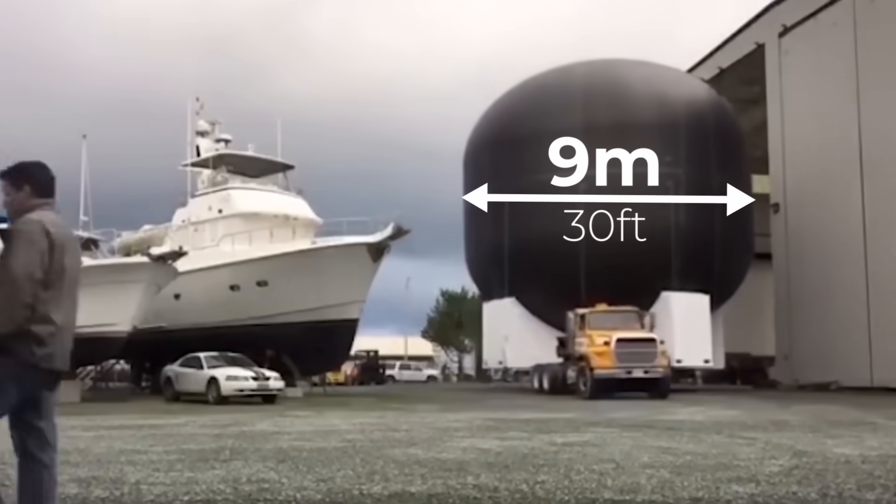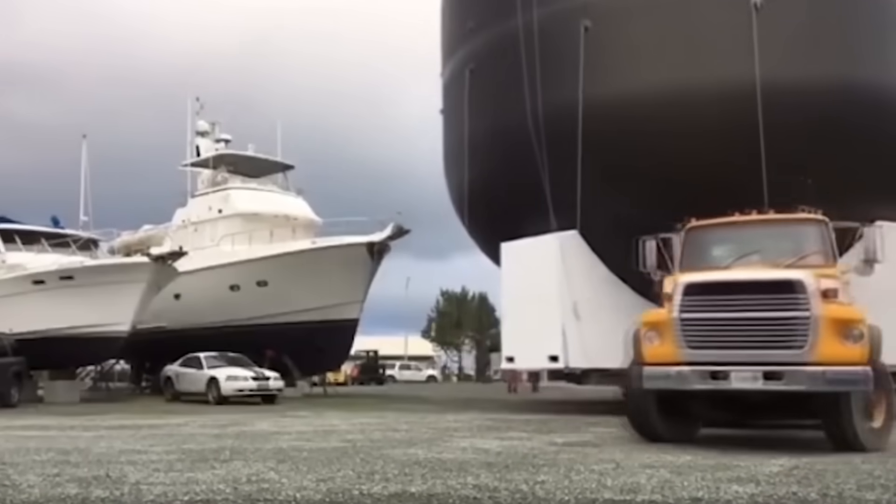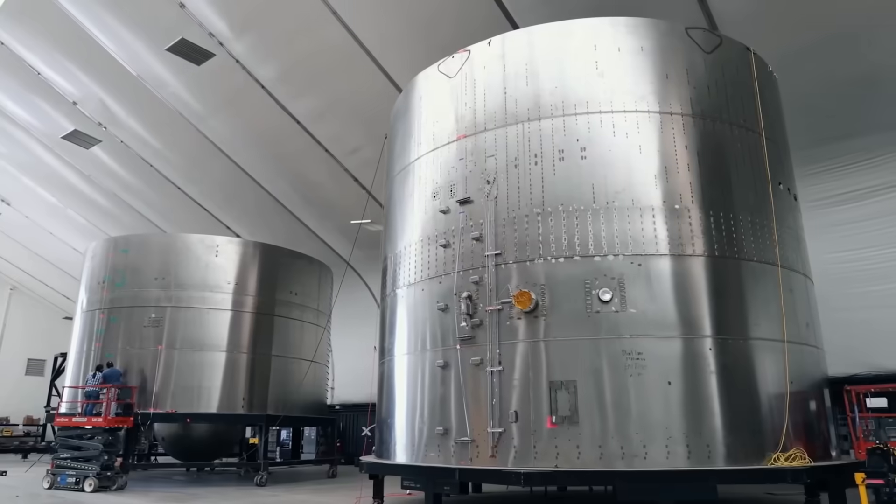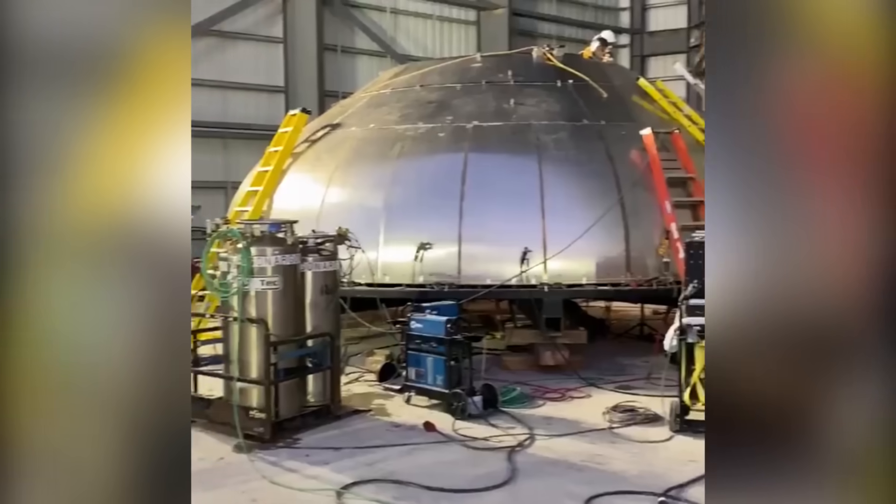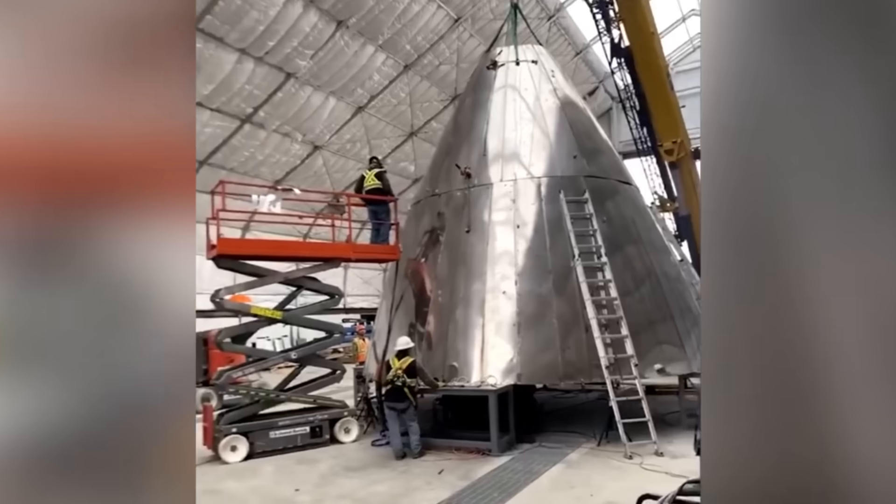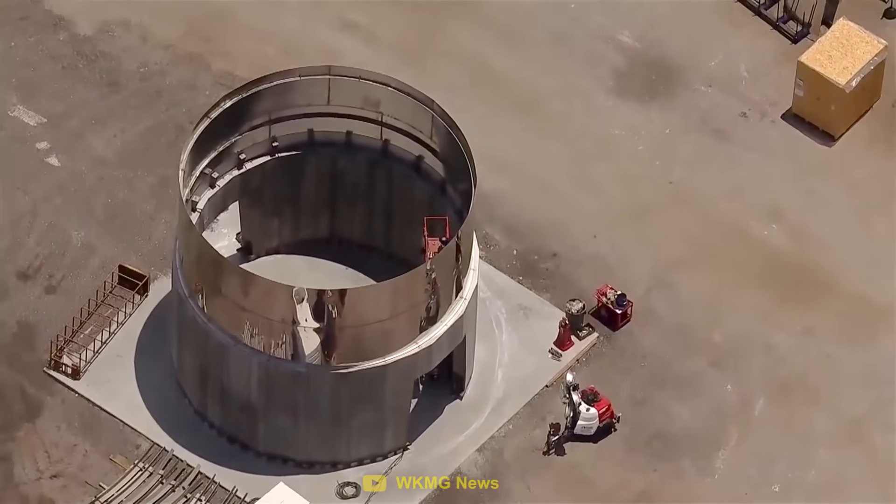For Starship's 9-meter-wide sections, SpaceX would need an oven larger than anything that exists at the moment. This is where stainless steel excelled. It could be put together quickly, using the most basic and affordable methods. And so, SpaceX began working on the world's shiniest rocket.